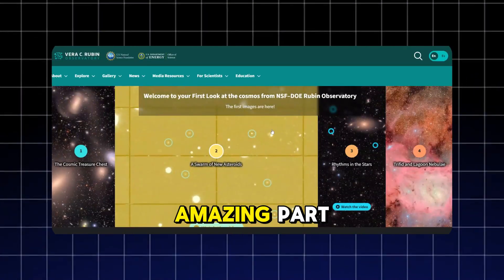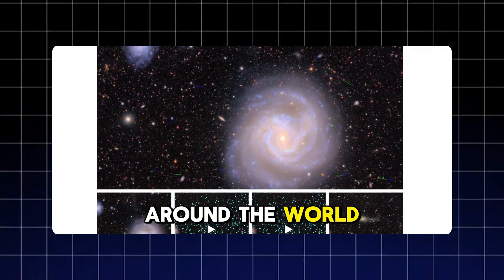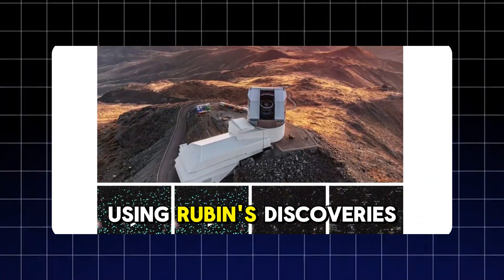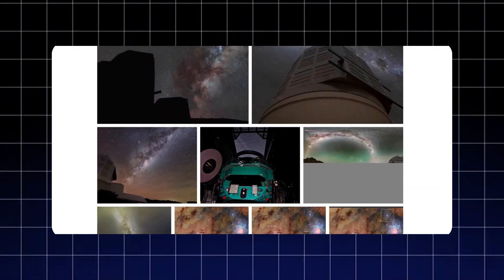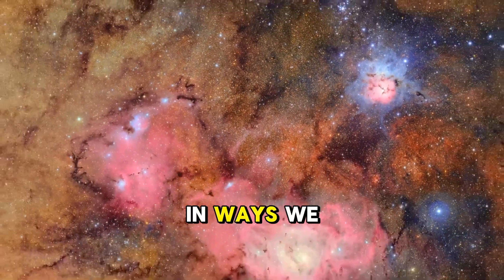But here's the amazing part. All this data will be made freely available to scientists around the world. Anyone with an internet connection will be able to explore the universe using Rubin's discoveries. This democratization of cosmic data will accelerate discoveries in ways we can't predict.